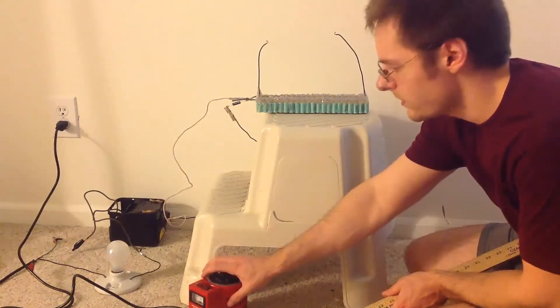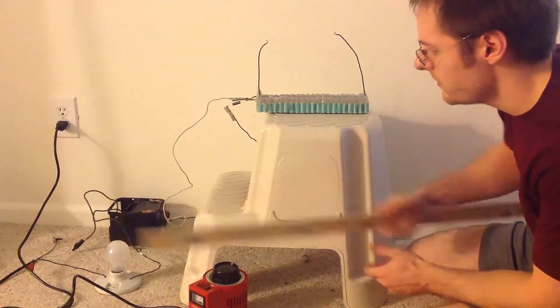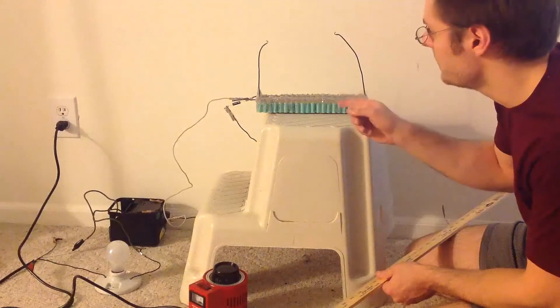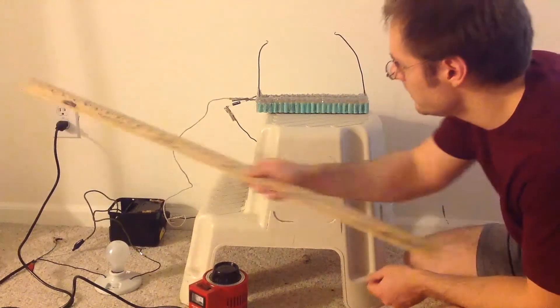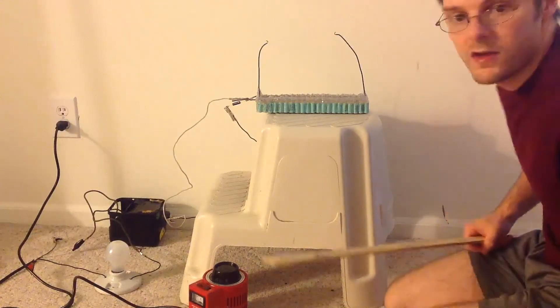Alright, I've got my Variac so I can ease into the voltage. I've got the 60 watt light bulb as a current limiter to make sure I don't burn up any of the resistors, and a 10,000 volt power supply. Let's see how it does.